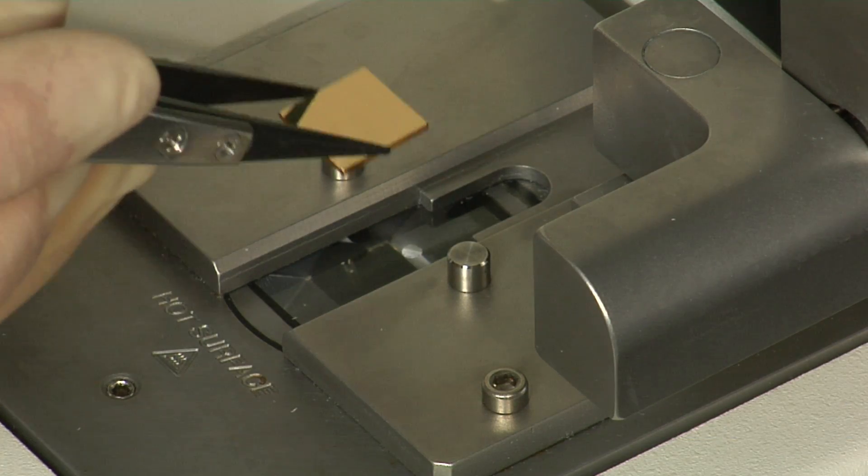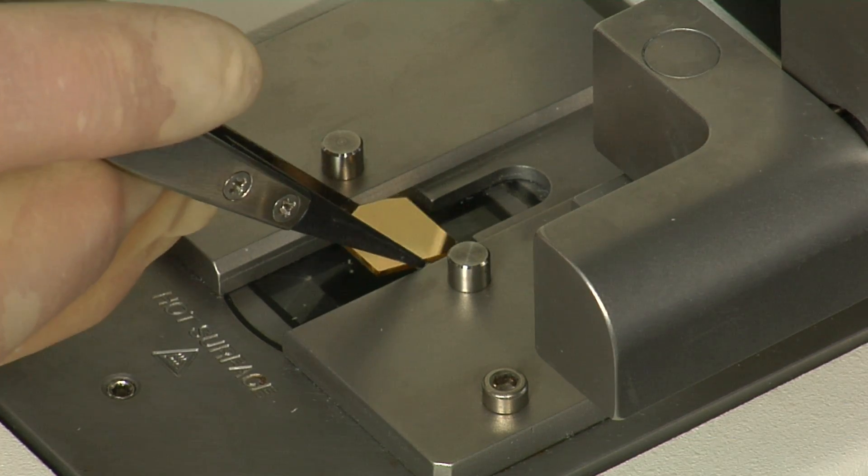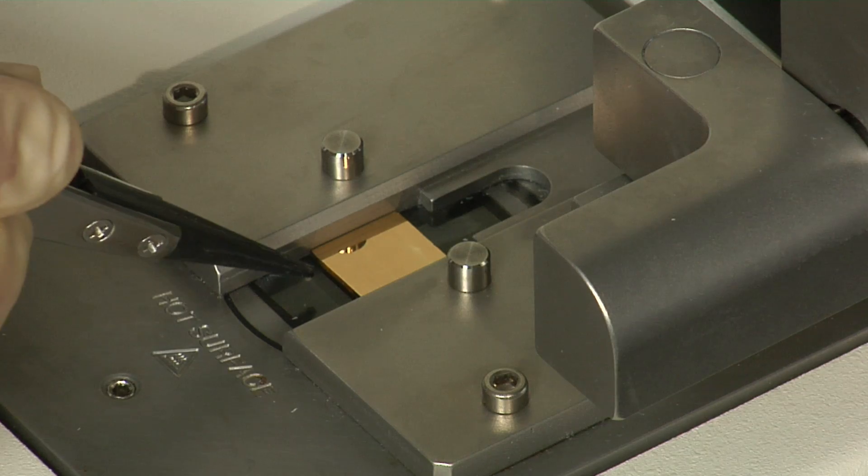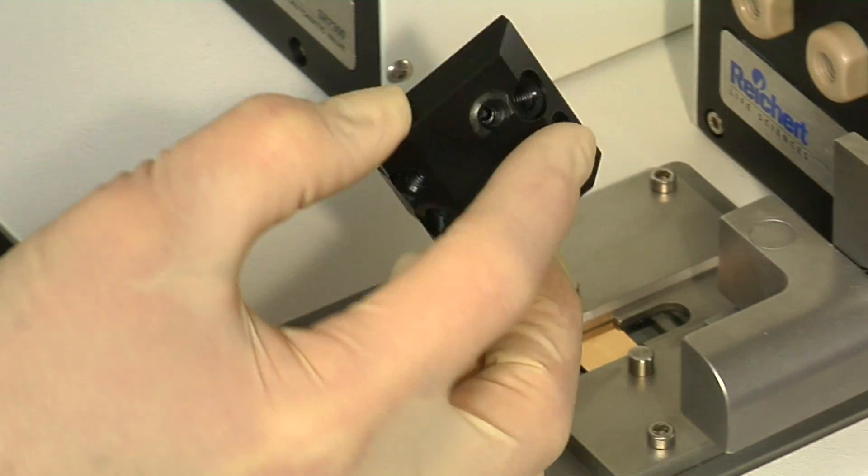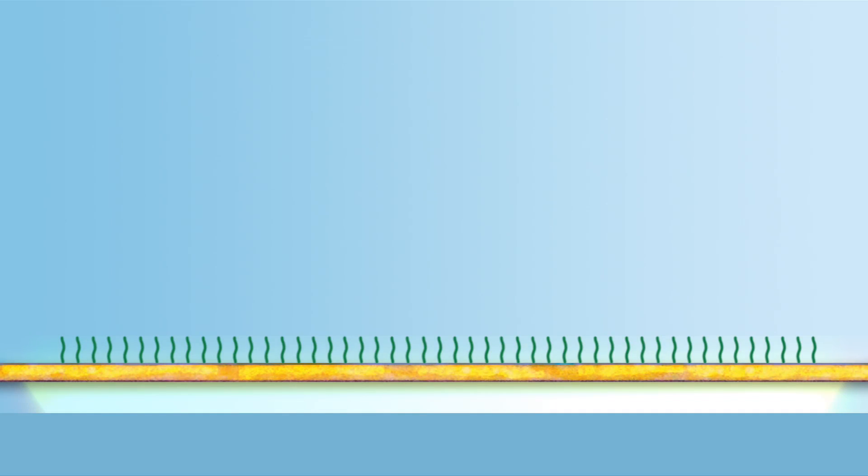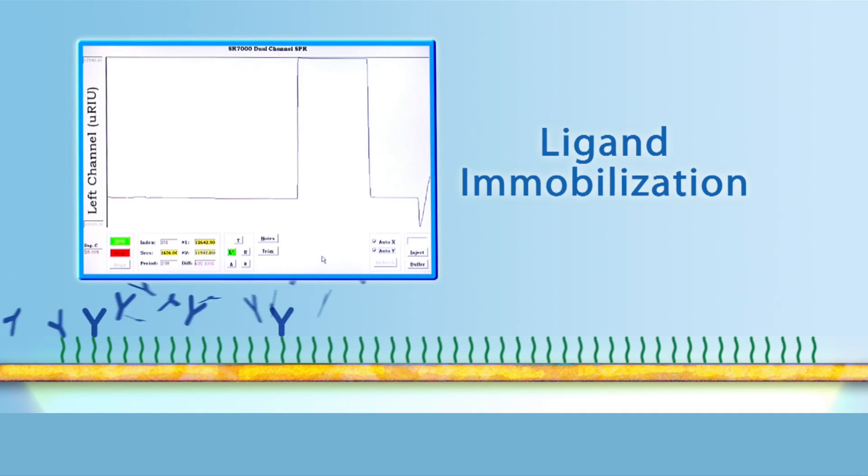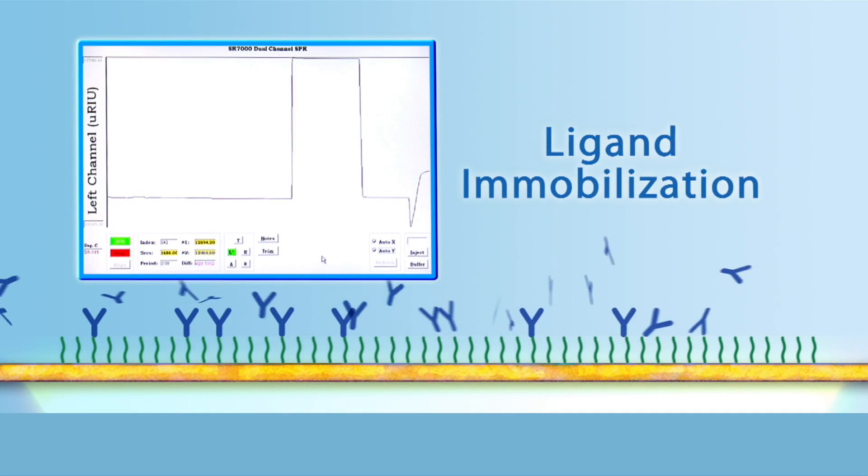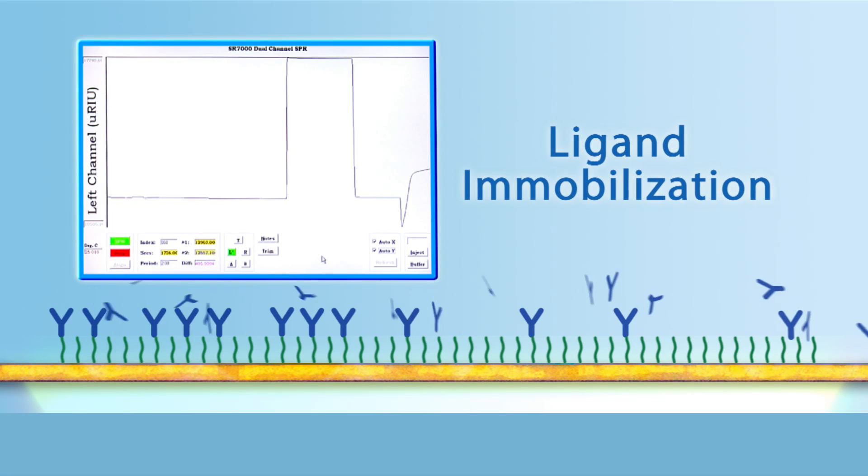A typical SPR experiment begins with mounting the appropriate sensor chip, initiating buffer flow, and preparing the samples to be analyzed. The first step of a kinetic experiment is ligand immobilization, when the ligand is immobilized or captured onto the sensor surface.